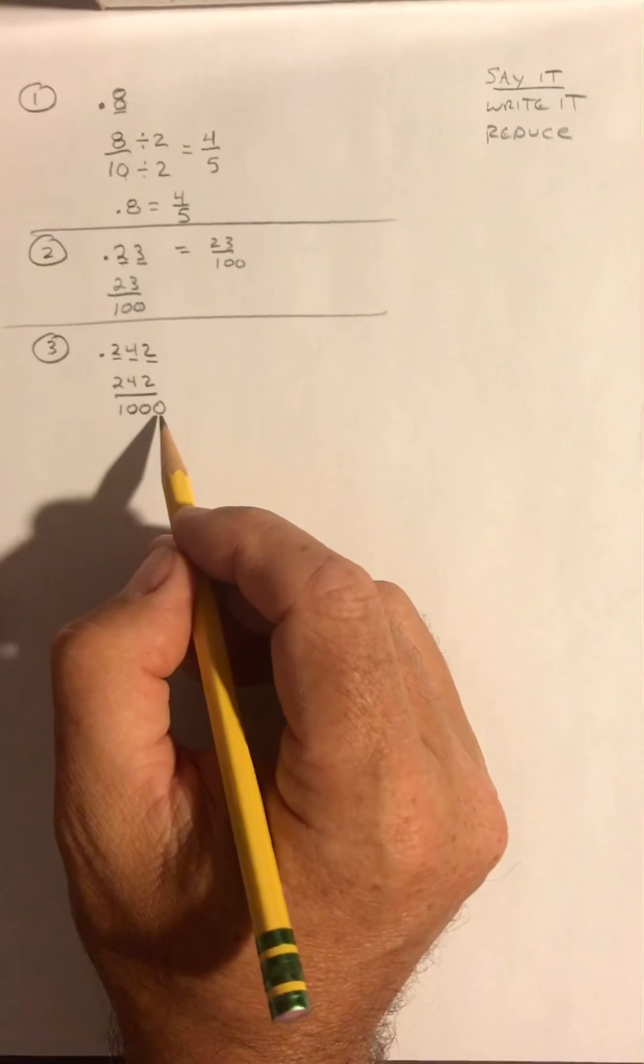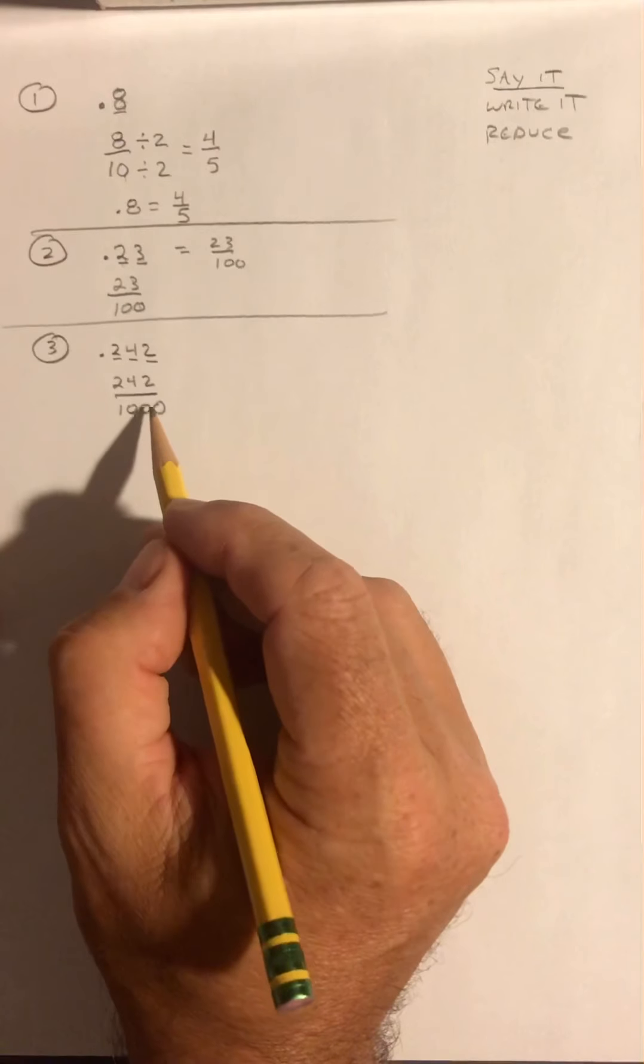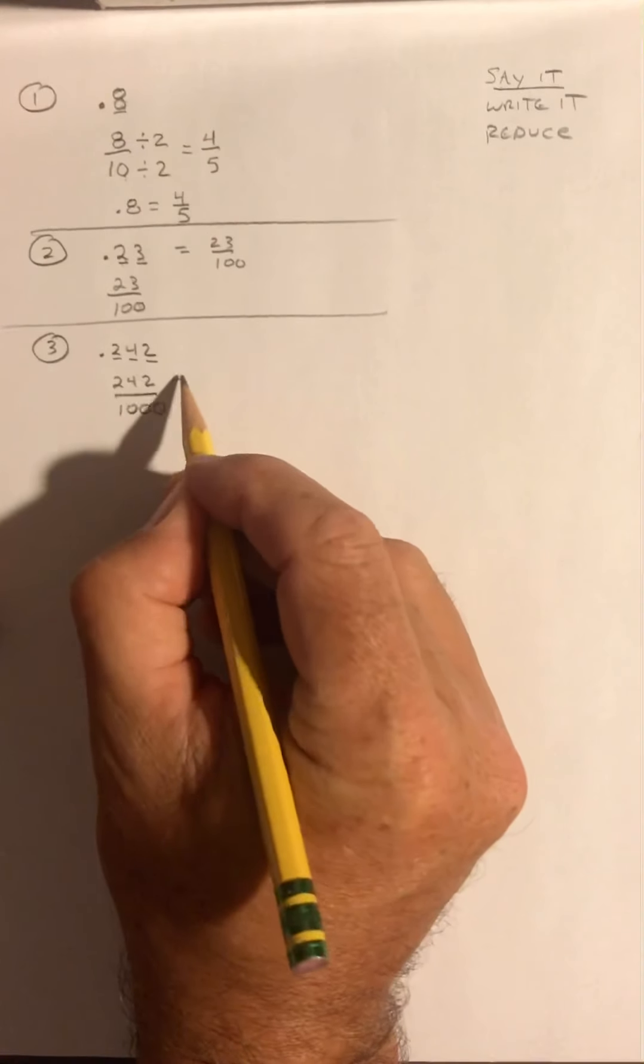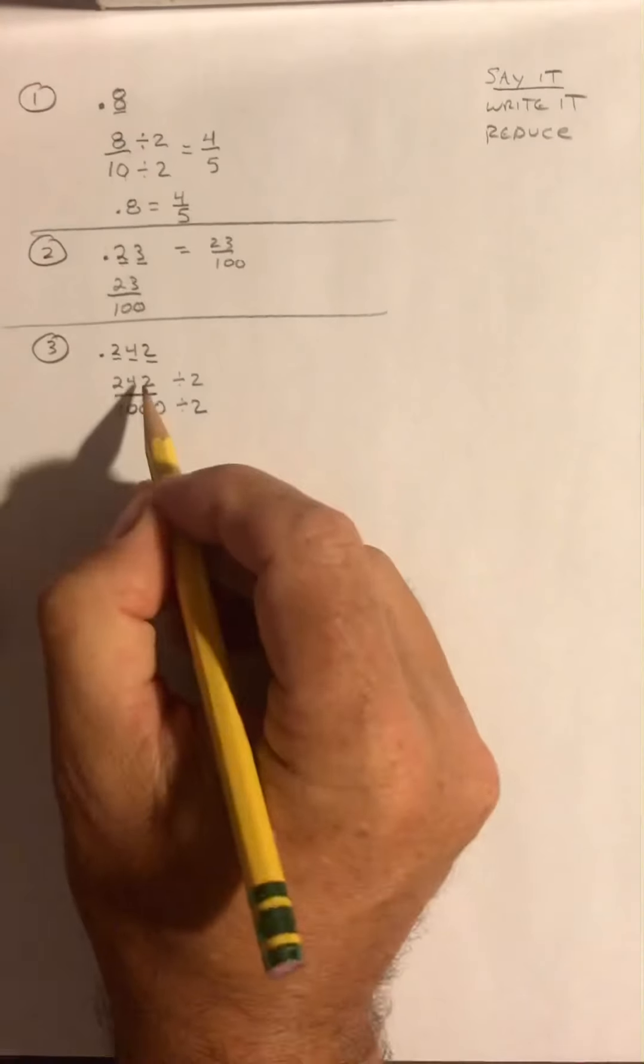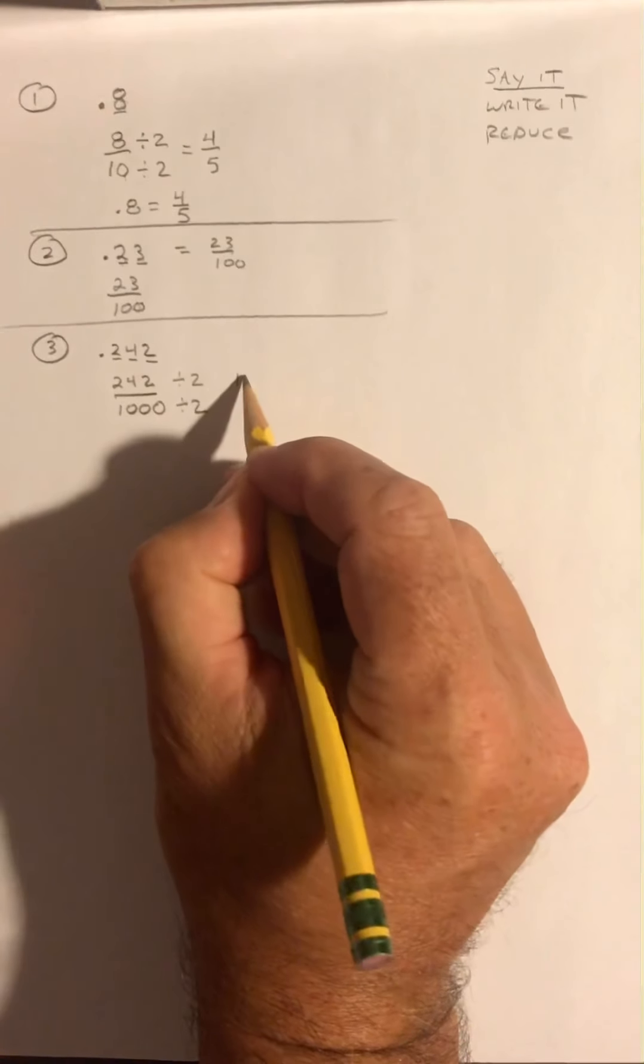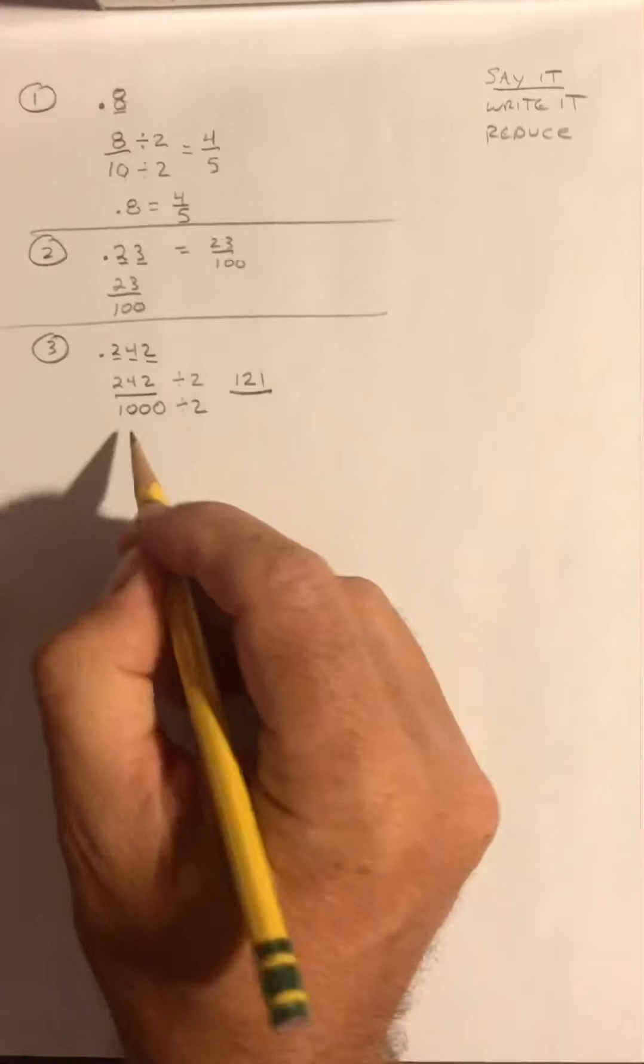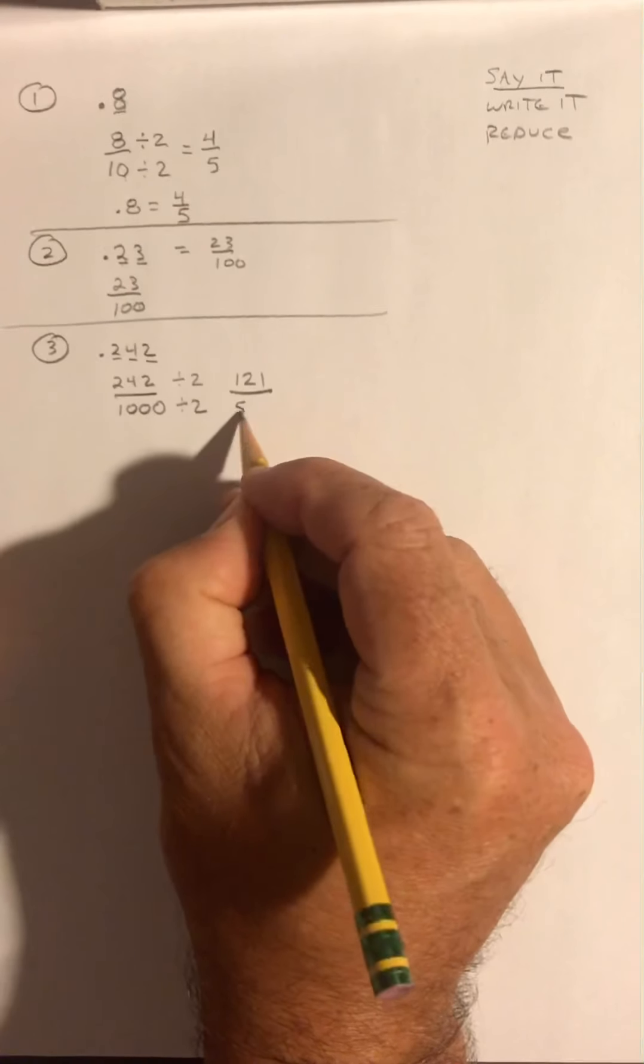Both these are even numbers, so I'm going to divide both of these by 2. 242 divided by 2 is 121, and 1,000 divided by 2 is 500.